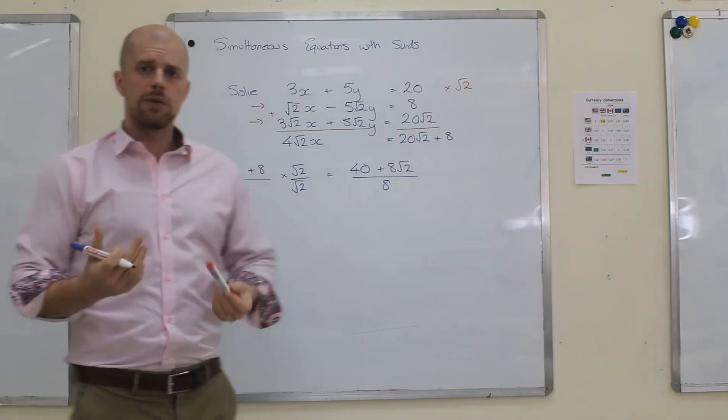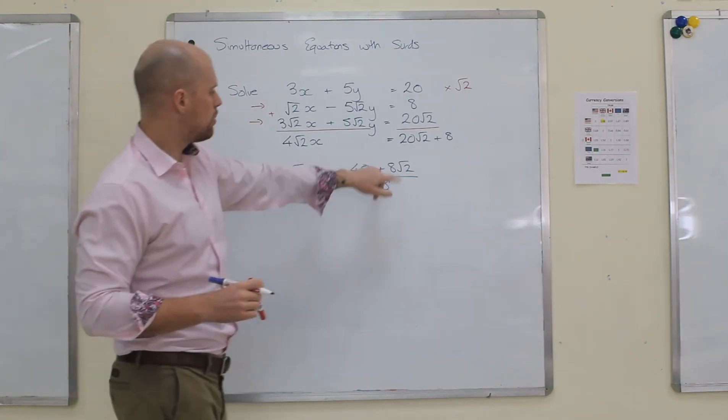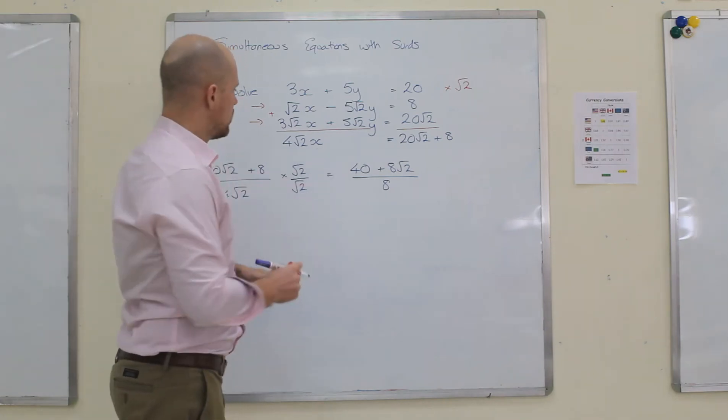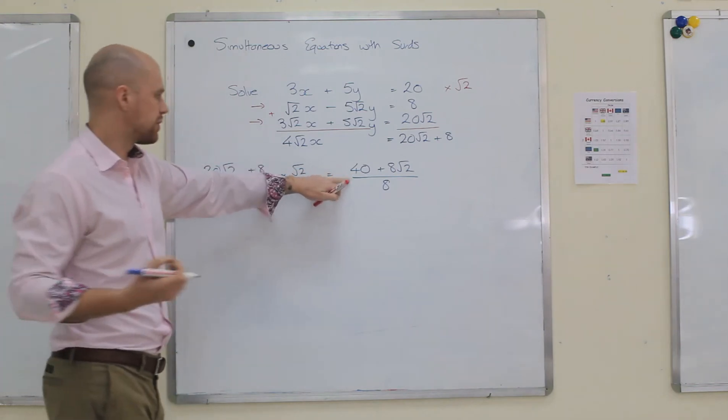Now, this will be one of the cases where a lot of you make mistakes. Each one of these on the top needs to be divided by 8. Sometimes you just cancel the 8s off and you'd leave the 40 there, but that's not true.